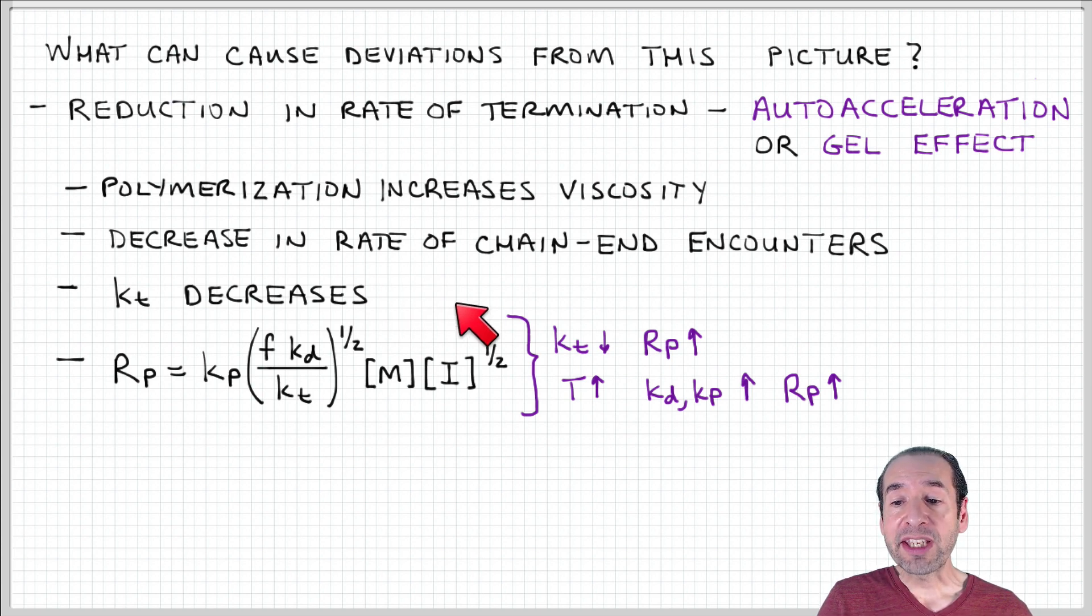So what can happen then, as you can see in our expression for the rate of polymerization, as the rate constant for termination goes down, this denominator becomes small, so the polymerization rate goes up. That can cause problems because this can sometimes be an exothermic process. So as polymerization rates go up, the temperature can go up.